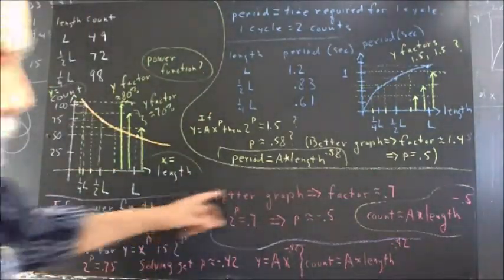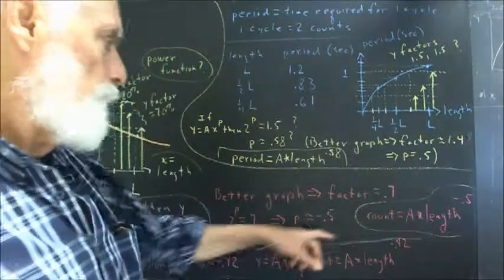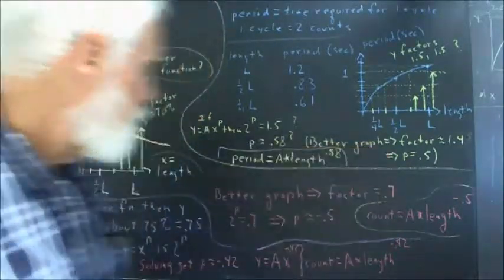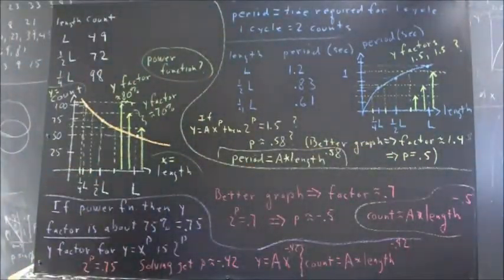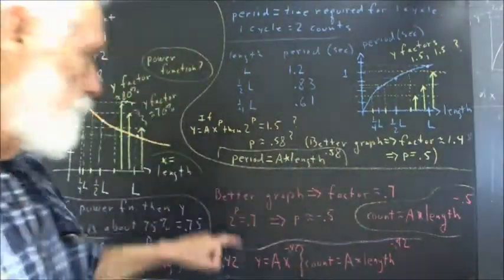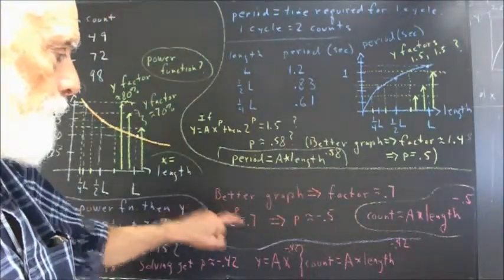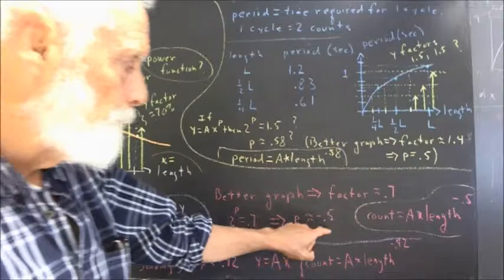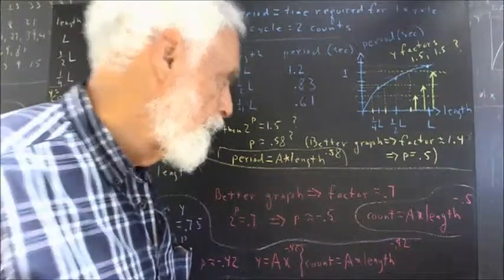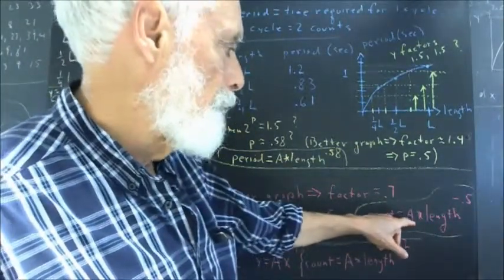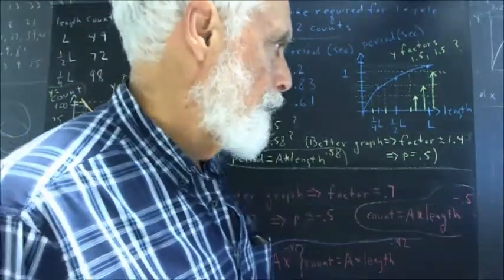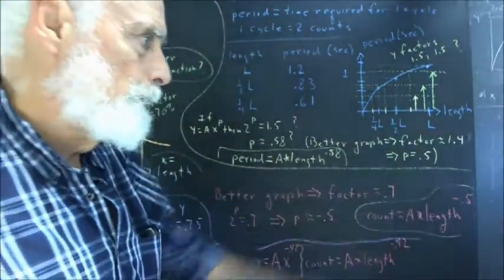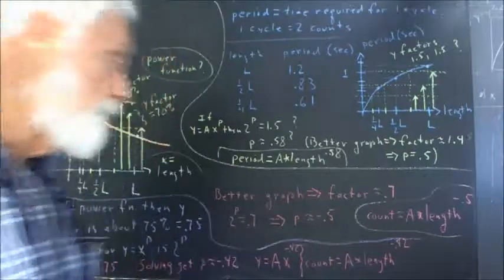And we would then get the model: count is A times our length to the negative 0.42. Now, a better graph would give us a factor closer to 0.7 than to 0.75. Factor 0.7 would give us a value of p. 2 to the p would equal 0.7, so the p would be about negative 0.5. And then our model might be closer to count equals A times the length to the negative 0.5. You're encouraged to investigate that.